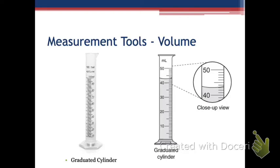Today we're going to look at measuring volume and mass. Previously we looked pretty exclusively at measuring items of length using a ruler and the metric side of the ruler. This device right here is called a graduated cylinder — have you heard that term before?